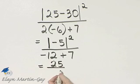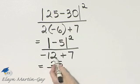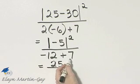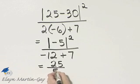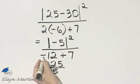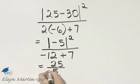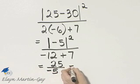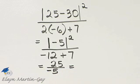And then negative 12 plus 7. How do you add two numbers with unlike signs? You subtract their absolute values and keep the sign of the number with the larger absolute value. So I would have negative 5 in the denominator.